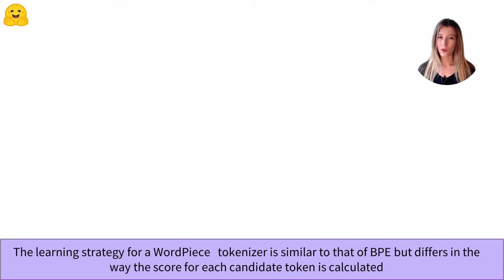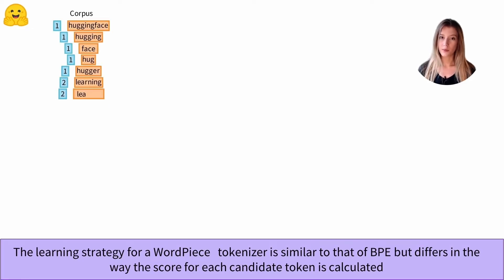So what is the training strategy of WordPiece? Similarly to the BPE algorithm, WordPiece starts by establishing an initial vocabulary composed of elementary units and then increases this vocabulary to the desired size.